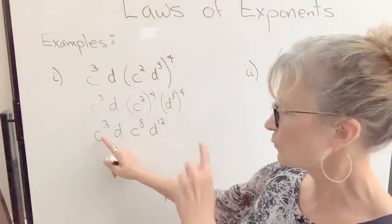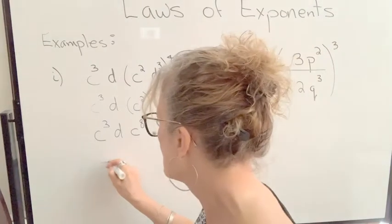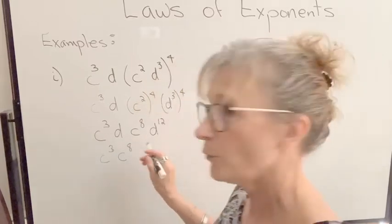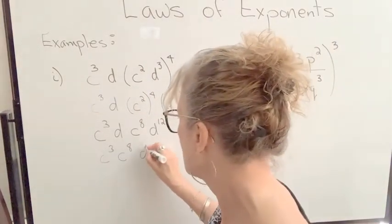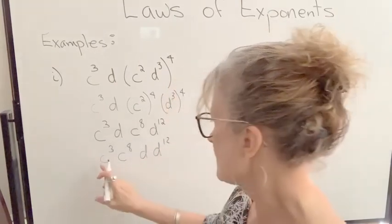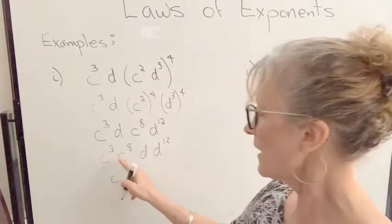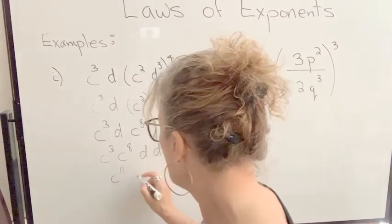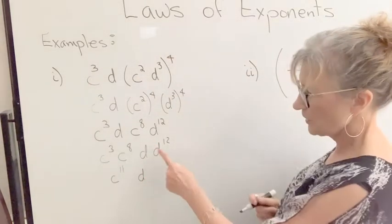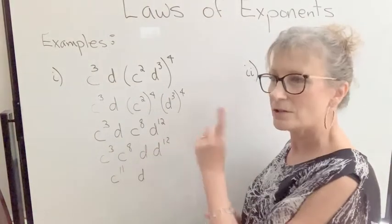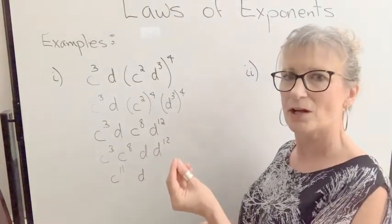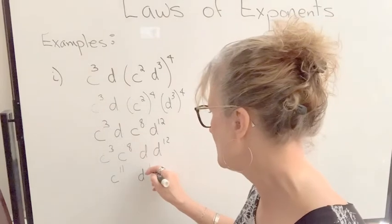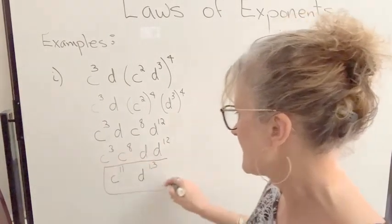So that will be c to the eighth. d cubed to the power of 4, remember I multiply, so that will be d to the twelfth. And I'm not done, you're not done simplifying when you still have rules that you can apply. So I have c cubed times c to the eighth, I'm just changing the order. When you're multiplying you can multiply factors in any order, d times d to the twelfth. So I'm going to combine these. Because I'm multiplying powers that have the same base, I add the exponents. So that will be c to the eleventh, and this will be d to the, now I haven't talked about this yet, but when there's no exponent there, it's just an exponent of one. So d to the power of one times d to the power of twelve will be d to the power of thirteen. And this is our simplified result.